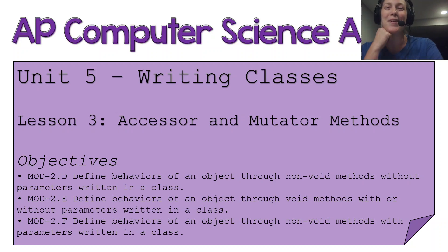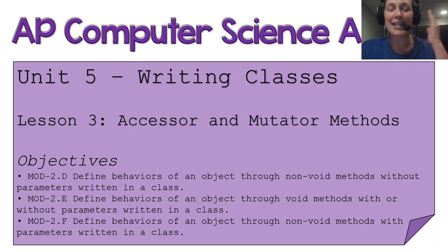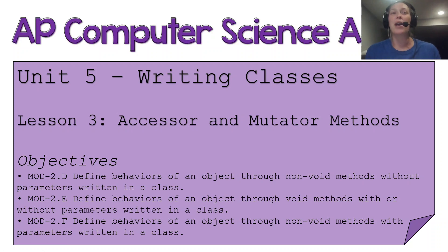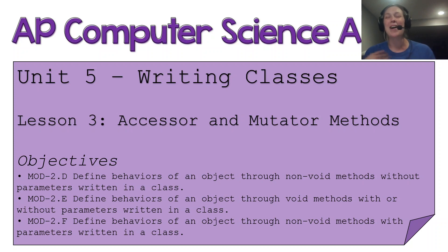Hello, my beautiful computer science students, welcome to another lesson in Unit 5: Writing Classes. Today's lesson is going to be over accessor and mutator methods, as well as the toString method, and we're going to be talking about all of these and how they're added to our object creation class to help us work with our object data a little bit more.